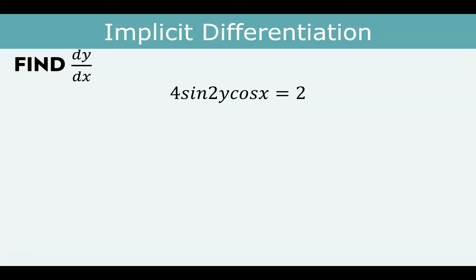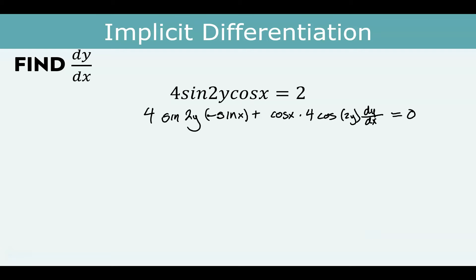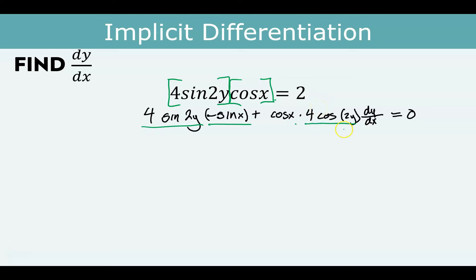The last example: 4 sin(2y) cos(x). These are getting complex. By the product rule, the derivative is the first function 4 sin(2y) times the derivative of cos(x), which is −sin(x), plus cos(x) times the derivative of 4 sin(2y), which is 4 cos(2y) times 2 dy/dx by the chain rule on 2y. The remaining algebra from there will be substantial.